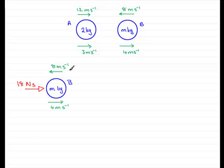Now, we've got that B approached A at 8 meters per second, had the impulse, and then moved away at 4 meters per second.